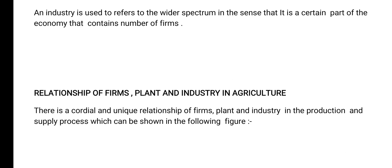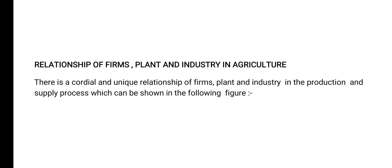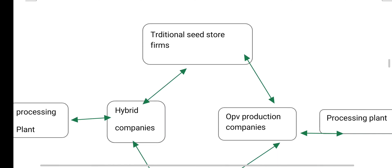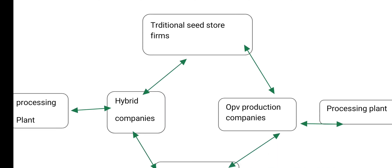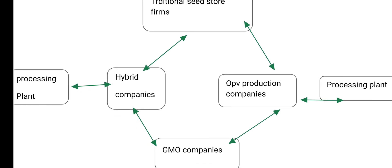Our next topic is the relationship of firms, plants, and industry. In agriculture there is a cordial and unique relationship of firms, plant, and industry in the production and supply process, which can be shown in the following figure. It is a traditional seed store; it contains hybrid companies, OPV production companies, and GMO companies. Hybrid companies are directly related to the processing plant.